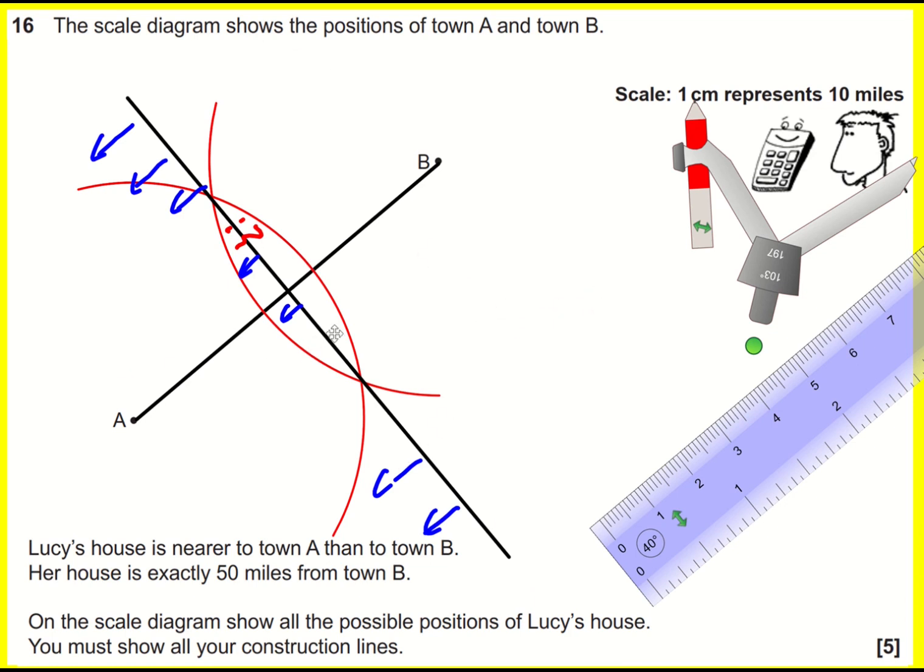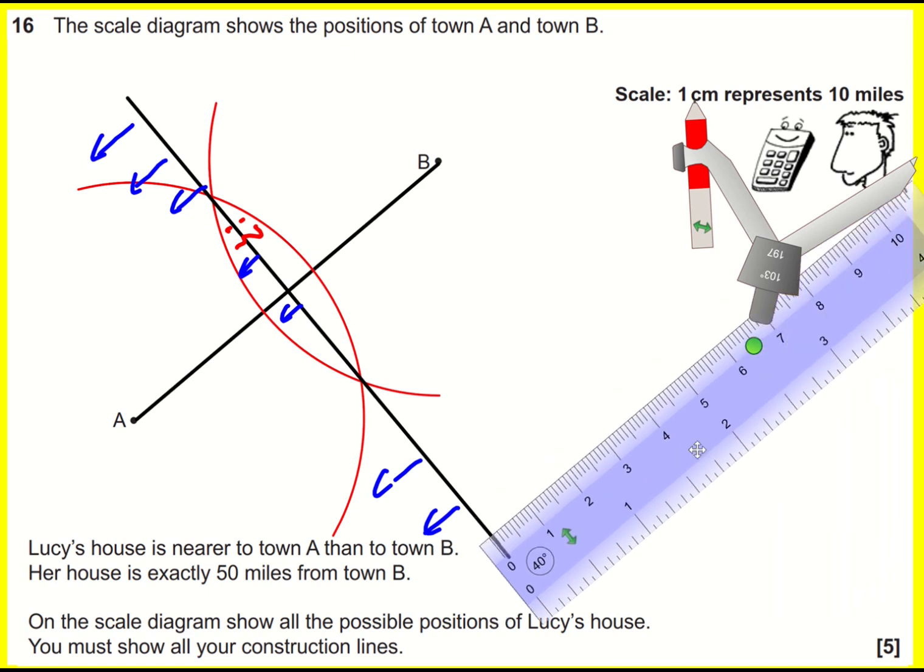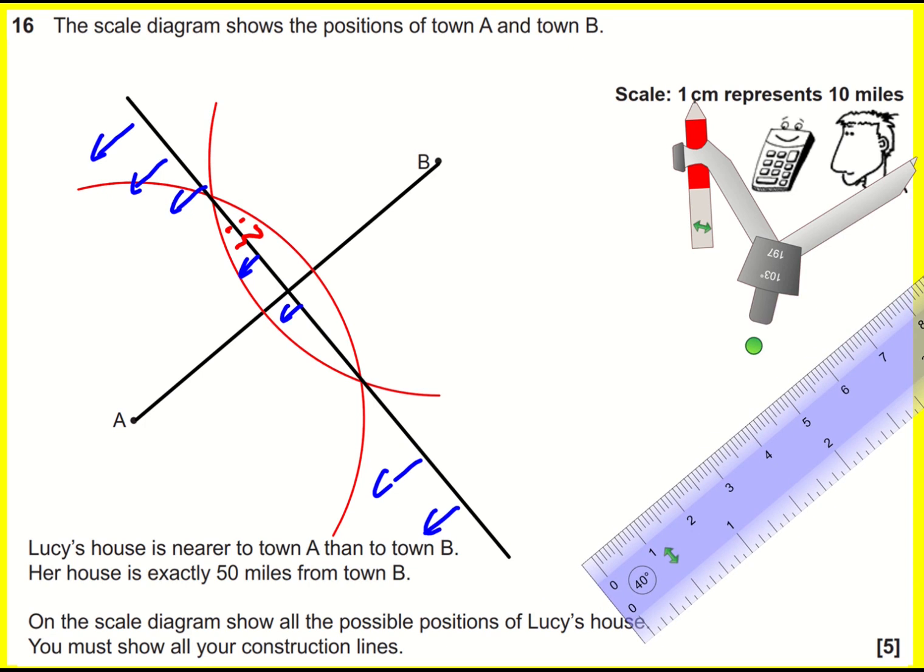We've now done that. So we've got all the points that are nearer to town A than to town B, but we've also got this fact that the house has to be exactly 50 miles from town B. And we've got a scale over here, one centimeter represents 10 miles. So to go from centimeters to miles, we have to times by 10. And to go the opposite way, we're going to divide by 10. And that's what we're going to do here. So to go from 50 miles to centimeters, I need to divide by 10, and it's going to be 5 centimeters.